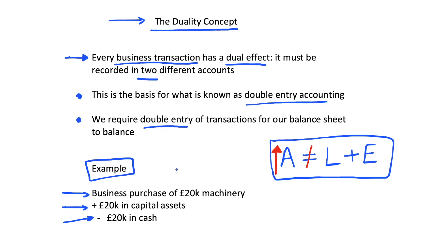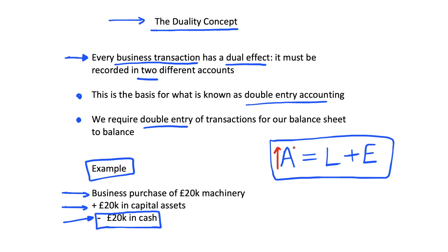Luckily, the duality concept says this transaction is going to be recorded in a second place. We've bought this machinery and increased our assets, but we've still had to pay for them. This has reduced £20,000 in cash in our business, because to get that increase in assets we've had to reduce our cash balance. Cash is also an asset, so this reduces A back down by £20,000, and the equation A equals L plus E will now balance again.